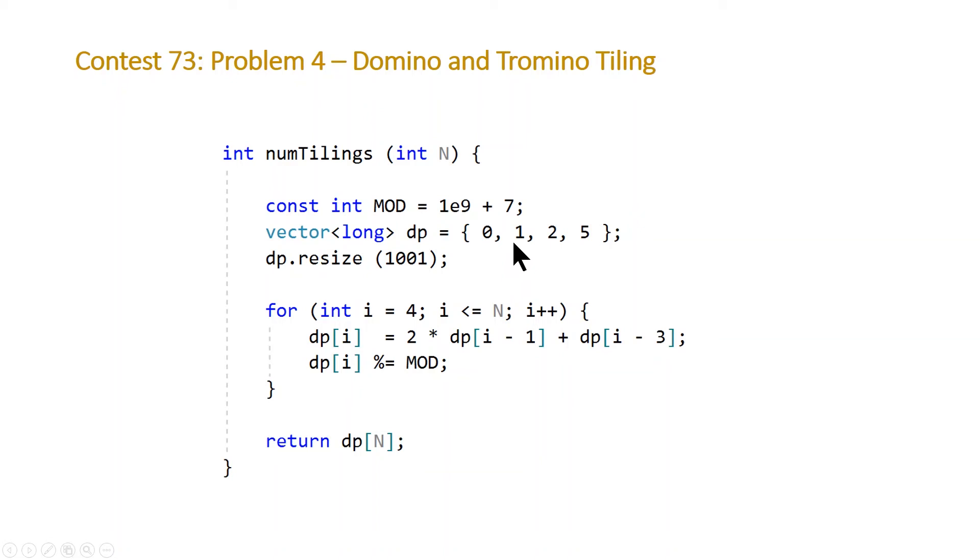We're going to initialize our vector initially to be equal to the first few values. The zero index doesn't matter. And we can recall that 1, 2, and 5 were the initial solutions to n equals 1, n equals 2, and n equals 3.